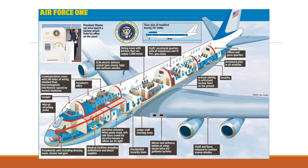Air Force One has a kitchen, a supply room, special defense systems to stop people from attacking the plane, lightning-fast internet allegedly, a gym — although I don't think our current president probably uses it much — and a whole bunch of staffers. Journalists also stay on this plane as it travels from country to country.